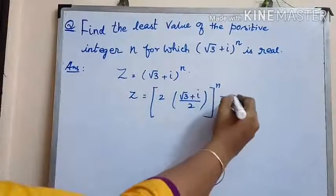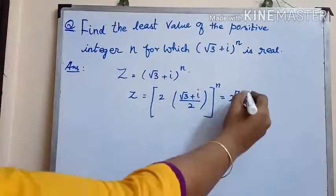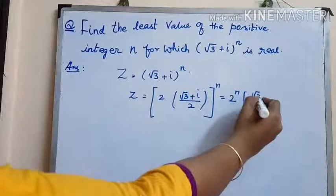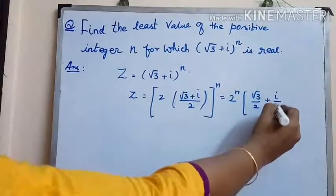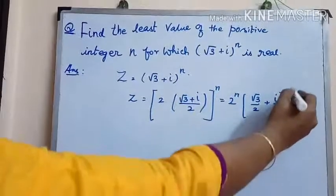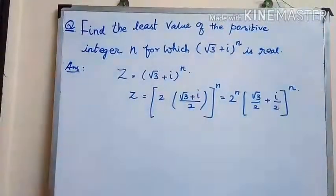which is equal to 2^n that can be brought out. The remaining part inside the bracket will have (√3/2 + i/2)^n.